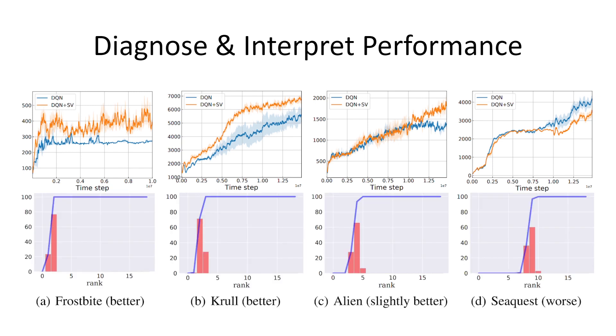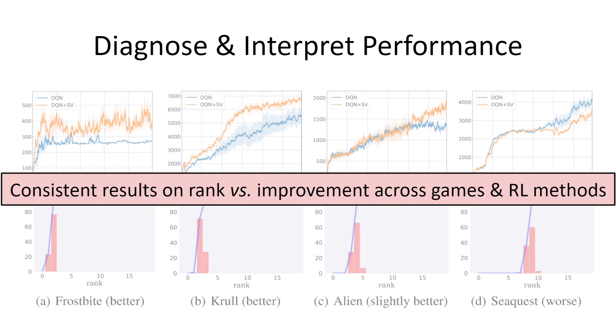And this naturally leads us to probe the rank of those games. As we show on the second row, unsurprisingly, there is a clear and indicative trend. For the first two games where SVRL performs better, the rank is pretty small. For the game Alien, the rank is moderately small, and hence, it still benefits from SVRL. However, for Seaquest, the rank is indeed quite large. Accordingly, SVRL is not able to help too much. Moreover, we remark that the same conclusions apply to a larger extent for many games and different value-based RL methods.